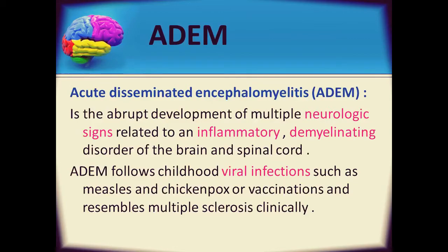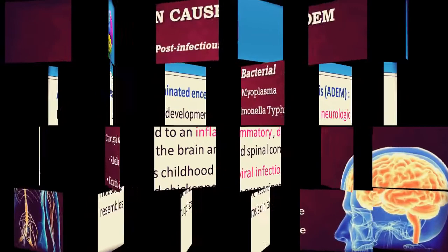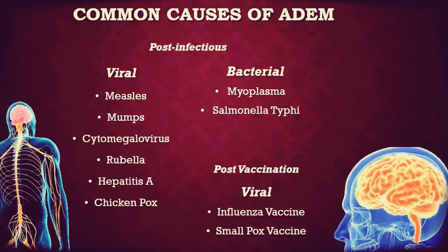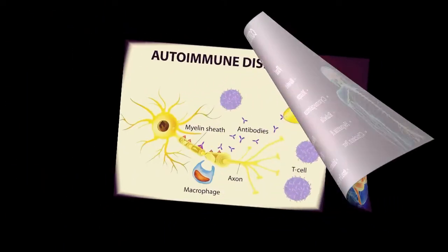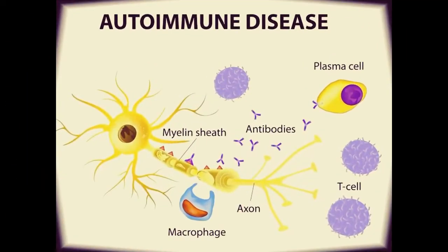There is usually a latent period of days to two to three weeks before symptoms emerge. The white matter of the brain, which contains nerve fibers and myelin, is predominantly affected in ADEM. Under the microscope it can be seen that there is an invasion with immune cells from the blood, where these cells accumulate and myelin — the protective fatty substance around nerves — is destroyed.